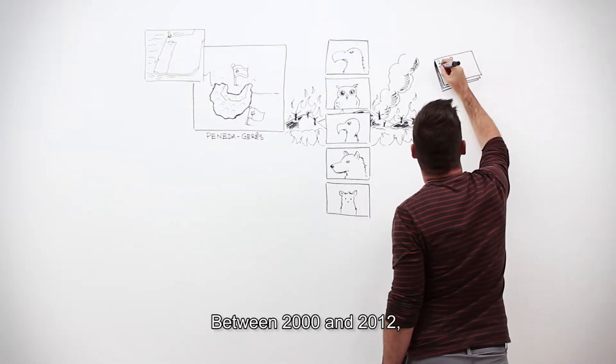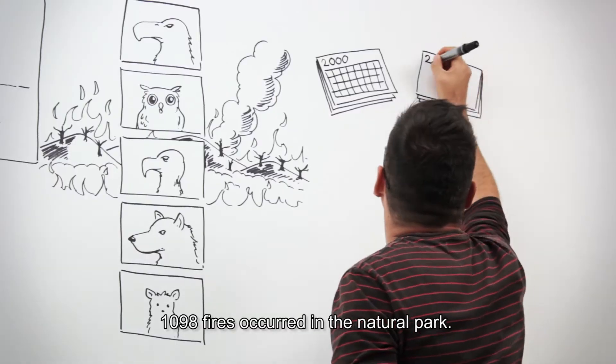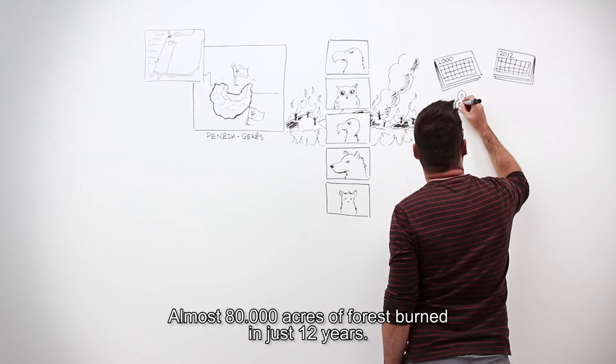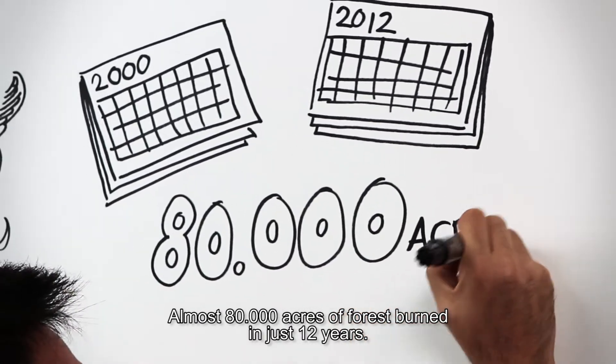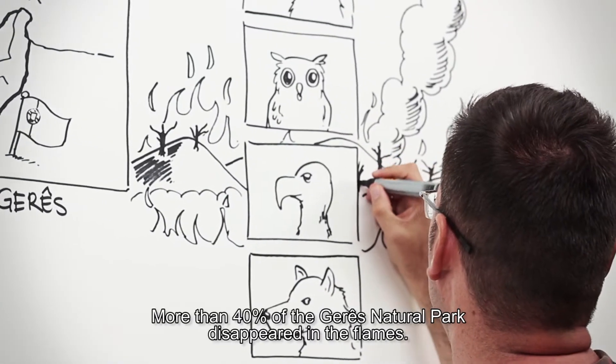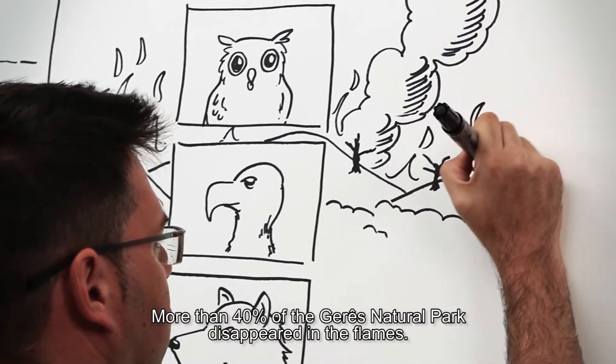Between 2000 and 2012, 1,098 fires occurred in the natural park. Almost 80,000 acres of forest burned in just 12 years. More than 40% of the Gerês National Park disappeared in the flames.